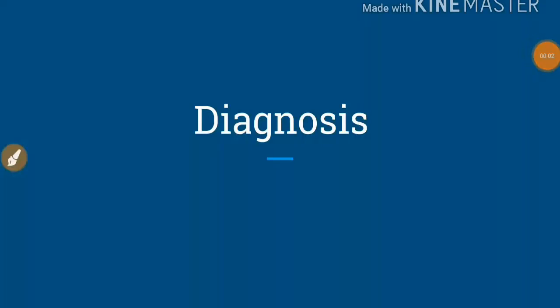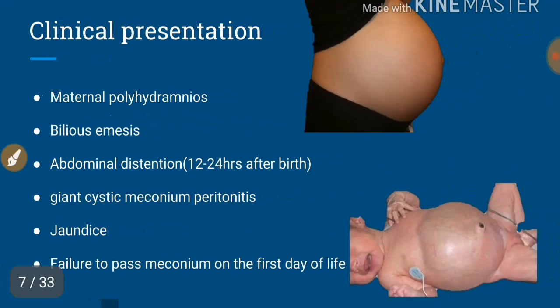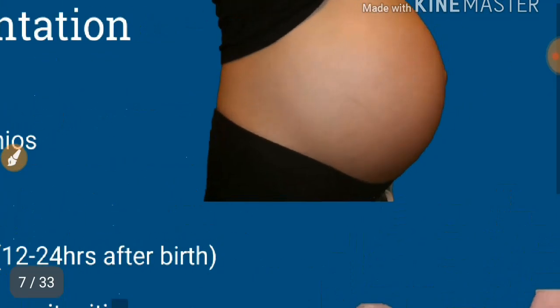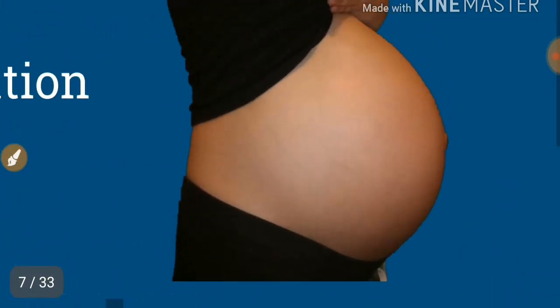Coming to the diagnosis of jejunoileal atresia, we diagnose the case based upon the clinical presentation and radiography. Clinical presentation: maternal polyhydramnios. This type of maternal polyhydramnios occurs during the later stages of gestation, around 34 to 36 weeks.